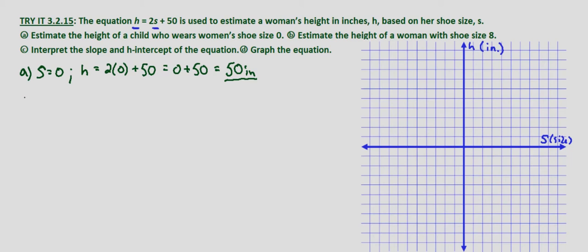With part b we're asked to estimate the height of a woman whose shoe size is 8. So that simply means s equals 8, she wears a size 8 shoe. So we substitute s equals 8 into our equation. h equals 2 times 8 plus 50 which equals 16 plus 50 which equals 66 inches.